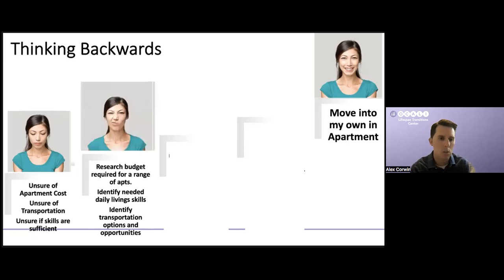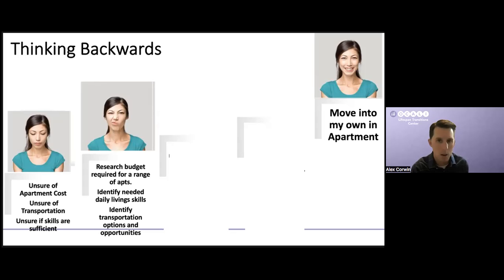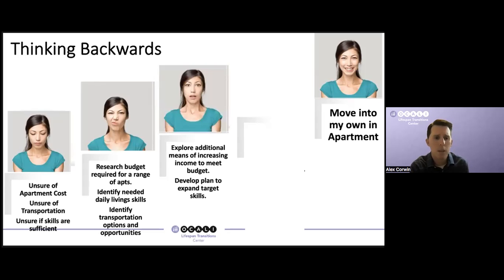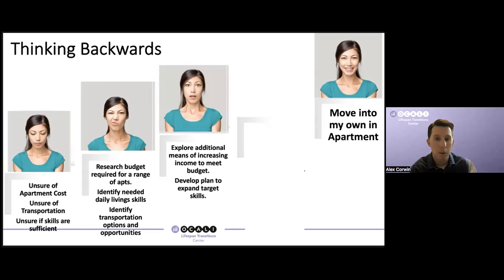The backwards plan could include steps like researching the budget required for a range of apartments in my community, identifying the daily living skills needed to live in the community, and understanding transportation options — public transportation, or what's available through some of my partners or eligibility systems. After completing that step, we might explore means of increasing income to meet the budget. Maybe currently my monthly income is about $400, but I need $600 based on my research in order to find a place to live in my community.